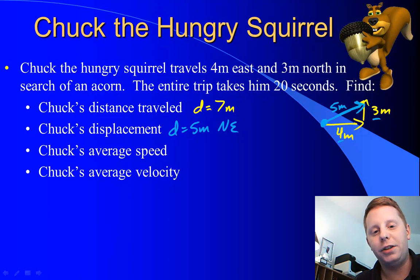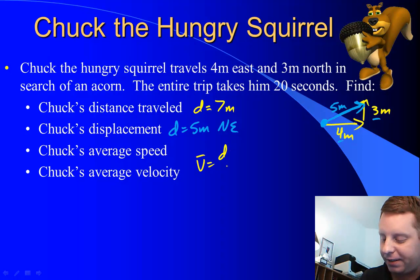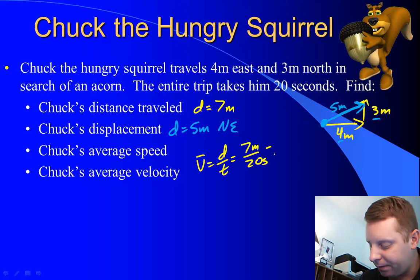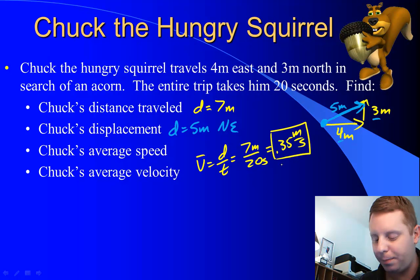Find Chuck's average speed. Well, average speed is distance over time, or 7 meters over 20 seconds is 0.35 meters per second for his average speed.